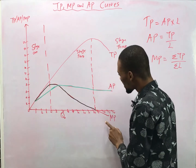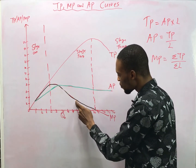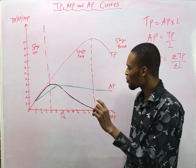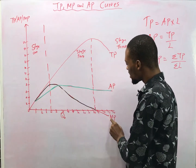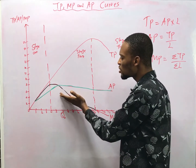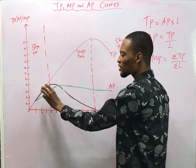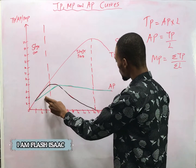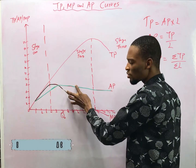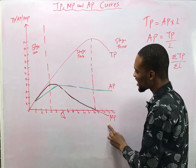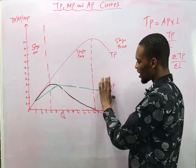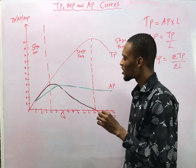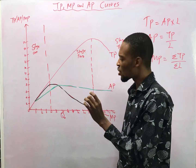Then the marginal product begins to drop, and average product begins to drop as well. At the point where they begin to drop, the marginal product becomes lower than the average product. As they are both rising, marginal product is higher than average product, but as they both begin to reduce, the marginal product is lower than the average product.